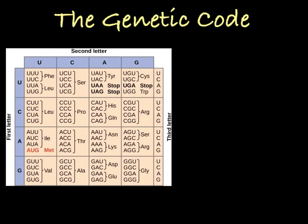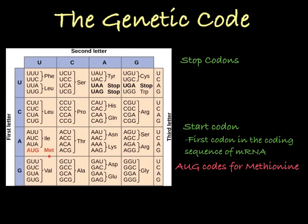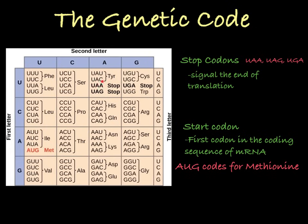A few other things you may notice in this genetic code is that we have start and stop codons that signal the beginning and the end of the coding portion of the mRNA strand. As you scan an mRNA molecule, translation will not start until you find a start codon, which is always the codon AUG, coding for methionine. This means that every polypeptide coming out of translation will have methionine as its first amino acid, though this methionine may be removed before the protein folds. From the start codon, you move through the mRNA, reading and translating the codons one after another, until you find one of three stop codons. The stop codons signal the end of the coding portion of the mRNA and the end of translation. Unlike the start codon, the stop codons don't code for an amino acid.